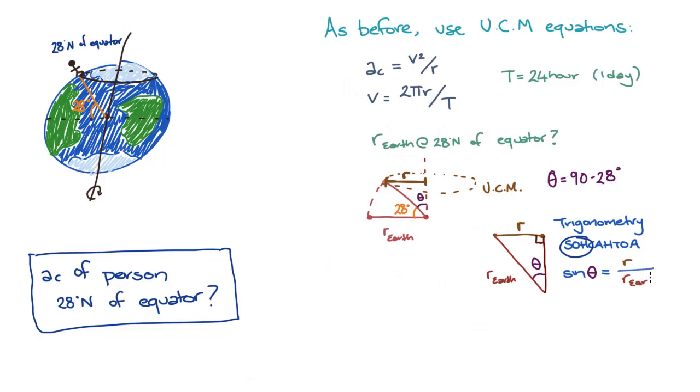r Earth is the radius of the uniform circular motion of the person standing at the equator, which is equal to the radius of the Earth. Rearranging, we find that r is equal to r Earth times sin theta. So now we have everything we need.